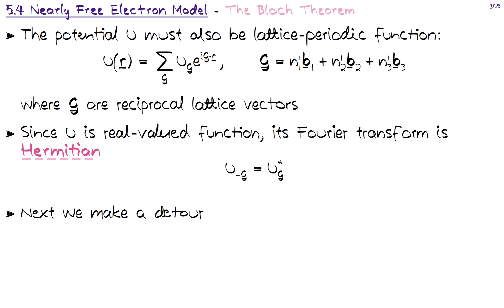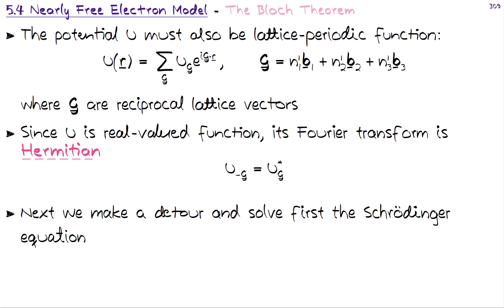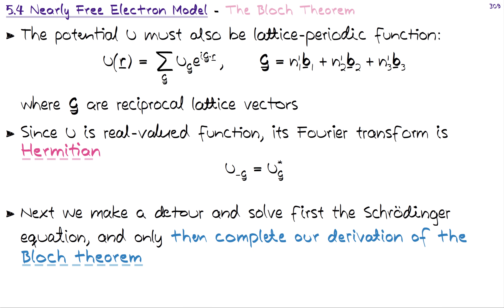Now we give the derivation of the Bloch theorem a brief rest and make a detour: we will first solve the Schrödinger equation, and only after that complete our derivation of the Bloch theorem. Because once we know the solution of the Schrödinger equation, we can in a few lines follow the derivation and complete it. We now have the forms — we have ψ and the periodic potential — and we can try to solve just the Schrödinger equation and see what we get.